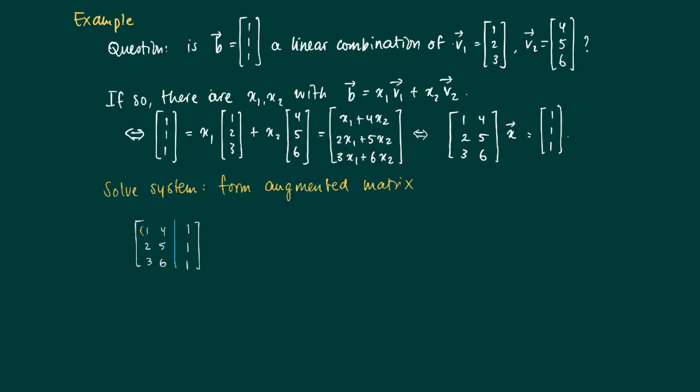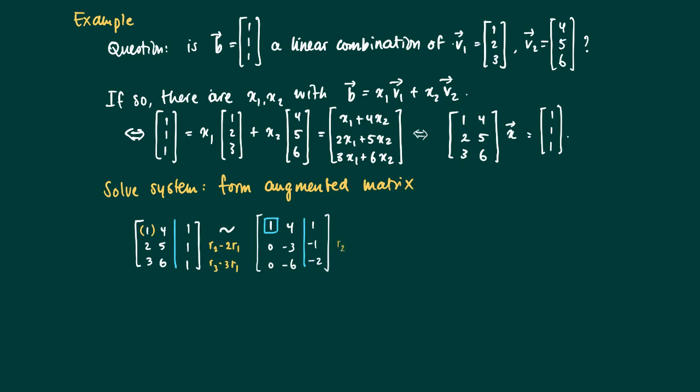And we calculate the reduced row echelon form for this matrix. So as a first step we have a candidate pivot 1 over here, and we subtract the right amounts of row 1 just to create the zeros in column 1. Now we get a second matrix over here. So now we created a pivot in element (1,1), coordinates (1,1).